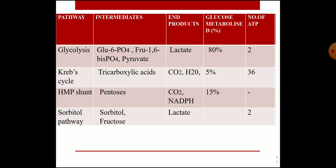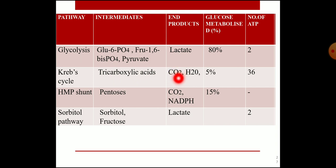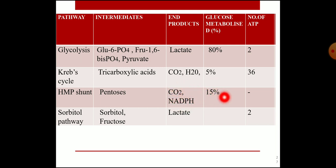Summary of metabolic pathways: in glycolysis, intermediates are glucose-6-phosphate, fructose-1,6-bisphosphate, and pyruvate; anaerobic glycolysis produces lactate and 2 ATPs. Krebs cycle (tricarboxylic acid cycle) produces CO₂, water, and 32 ATP molecules from 5% of glucose. The HMP shunt produces pentoses, CO₂, and NADPH from 15% of glucose. The sorbitol pathway produces sorbitol and fructose as intermediates, with lactate and 2 ATPs as end products.